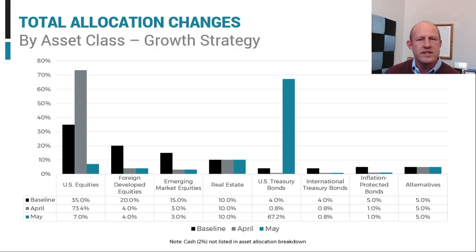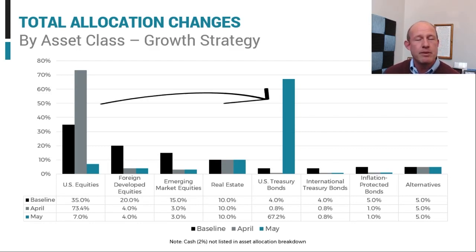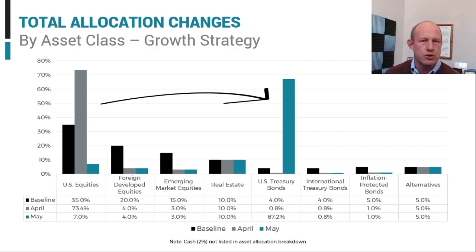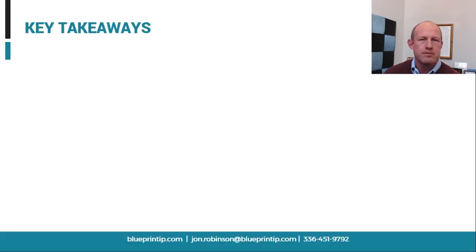What does this look like graphically? It can really be summed up with one arrow: exposure from U.S. equities is getting pushed over to U.S. Treasuries in the form of ultra-short-term duration fixed income.